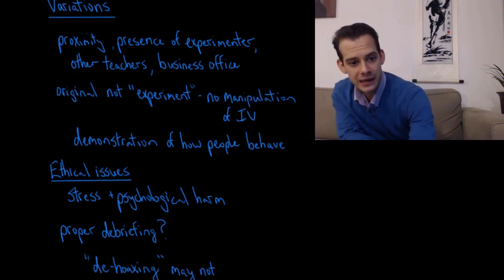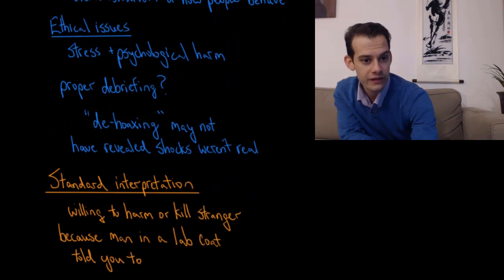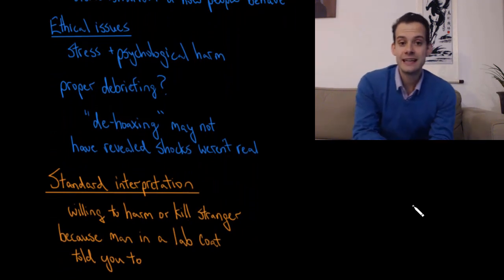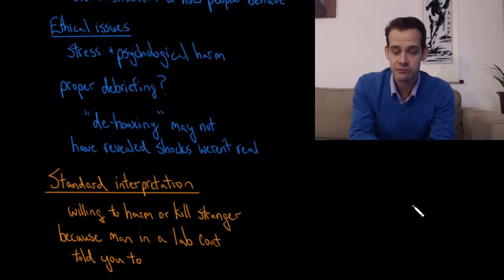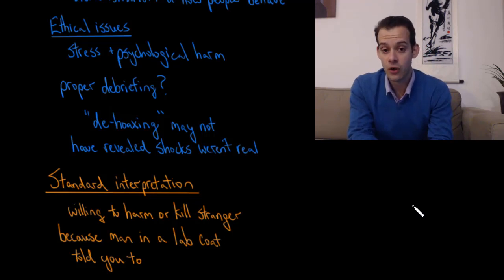And it's also been alleged that Milgram may not have given proper debriefings to all of his participants. So he did do what he called a de-hoaxing at the end of the study where the learner would emerge unscathed from the room and shake hands with the teacher and appear to be fine. But it may not have always been the case that Milgram revealed that the shocks weren't actually real, but simply showed that the learner was okay. And this is described in Gina Perry's excellent book Behind the Shock Machine, which I'll put a link to in the description.